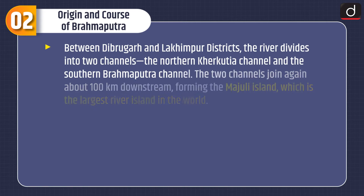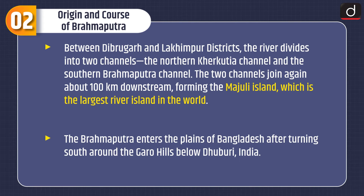Between Dibrugarh and Lakhimpur districts, the river divides into two channels: the northern Kherkutia channel and the southern Brahmaputra channel. The two channels join again about 100 km downstream, forming Majuli Island, which is the largest river island in the world. The Brahmaputra then enters the plains of Bangladesh after turning south around the Garo Hills, below Dhuburi, India.